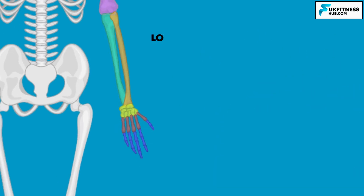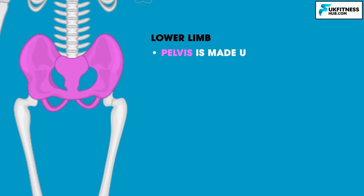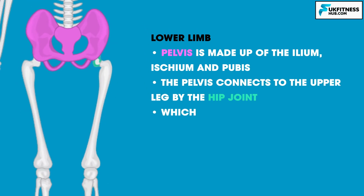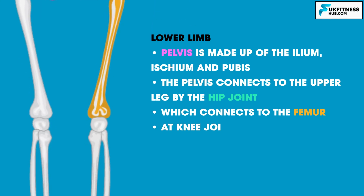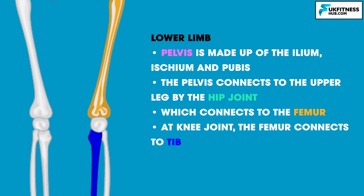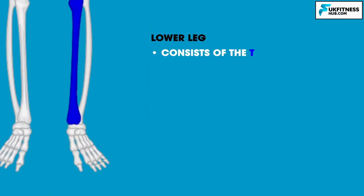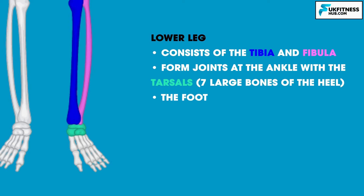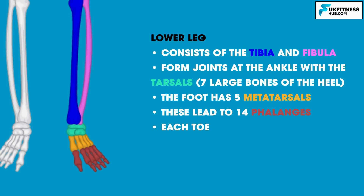In the lower limb we have the pelvis, made up of the fusion of 3 bones: the ileum, ischium, and pubis. The pelvis connects to the upper leg via the hip joint, which is a deep socket for the head of the femur. At the knee joint, the femur connects to the tibia at the femoro-tibial joint and the patella at the femoro-patellar joint. The lower leg consists of the tibia and fibula, forming joints of the ankle with the tarsals — 7 large bones of the heel. The foot has 5 metatarsal bones leading to 14 phalanges to make up the toes, with each toe having 3 phalanges apart from the big toe, which has 2.